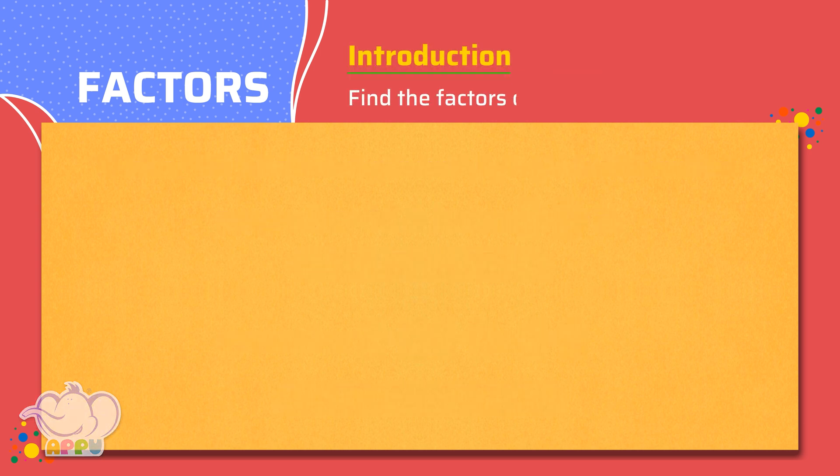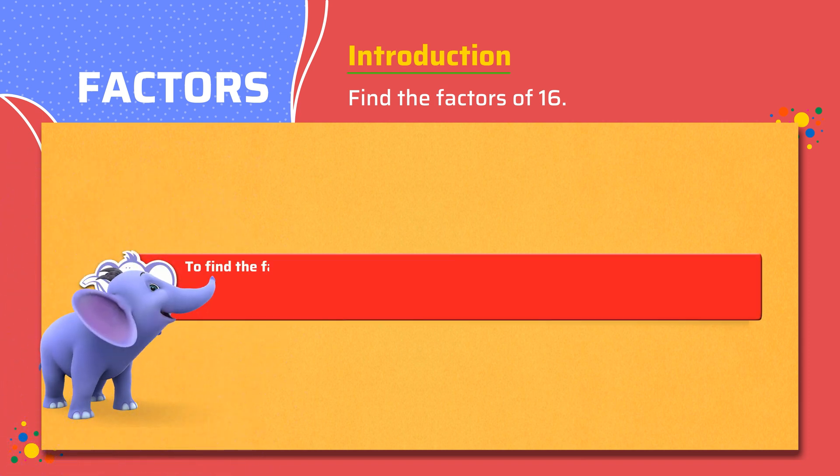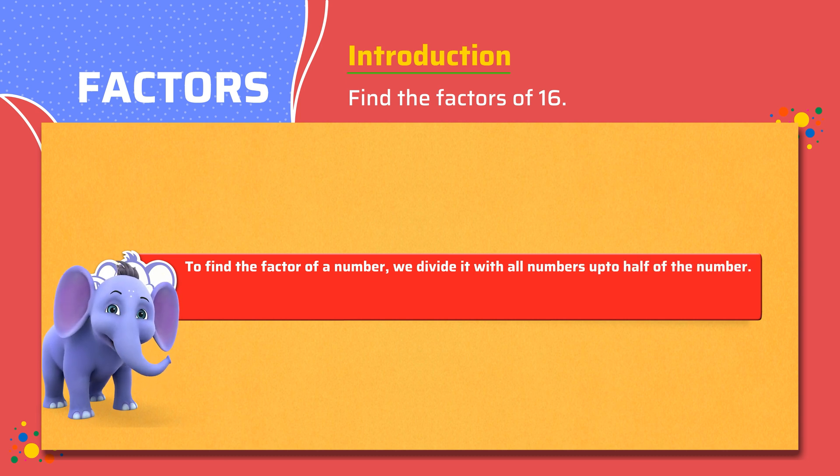Find the factors of 16. To find the factor of a number, we divide it with all numbers up to half of the number. For example, to find factors of 16, we divide 16 with numbers from 2 up to half of 16, that is, till 8.